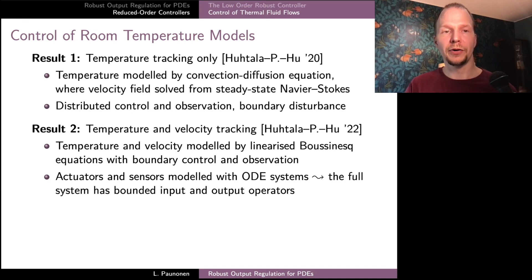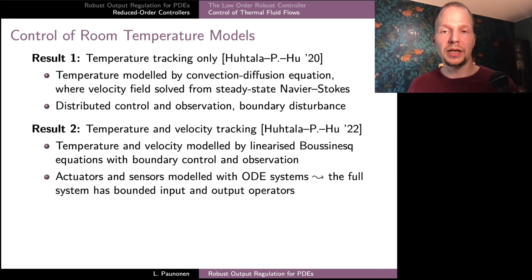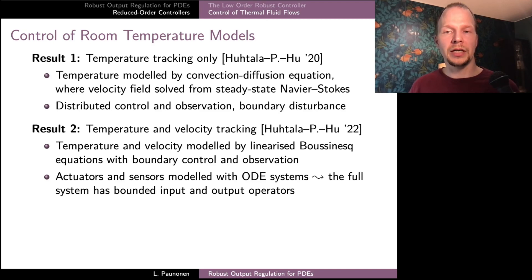In the second part of his work, he took things further in order to consider the tracking of both temperature and velocity of the fluid. He stayed in the linear setting but now considered temperature and velocity modeled by the linearized Boussinesq equations. In the non-linear versions, these equations describe how velocity and temperature interact and affect each other. Konsta controlled the version of these equations linearized around a steady-state solution. In this model he also considered boundary control and observation, which for the PDE model creates unbounded input and output operators.